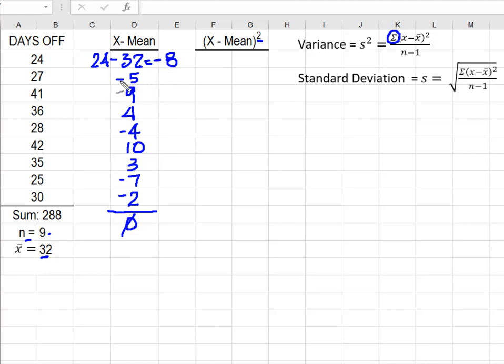And that gets rid of my negative signs. So negative 8 squared gives me 64. This gives me 25. 9 squared is 81. 16 for both positive and negative 4. 10 squared is 100.